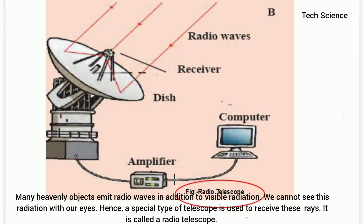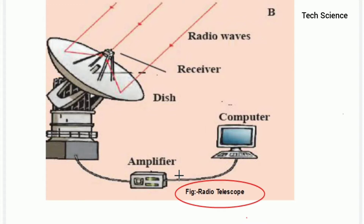A radio telescope is a special type of telescope used to receive rays which are not visible to our eyes, which cannot be sensed by our eyes. Such a kind of telescope is called a radio telescope. Now let's see the construction and working of the radio telescope.